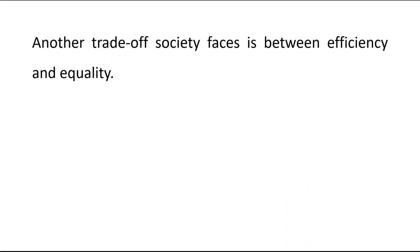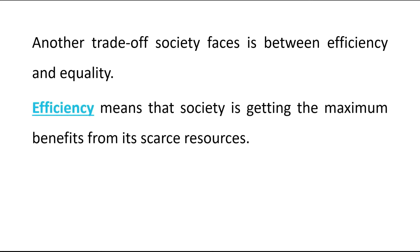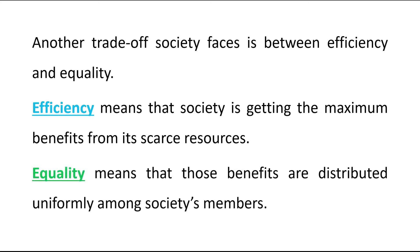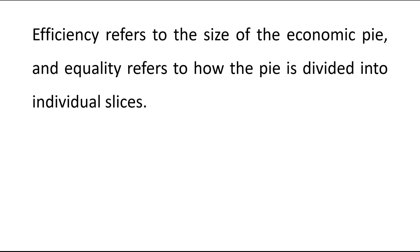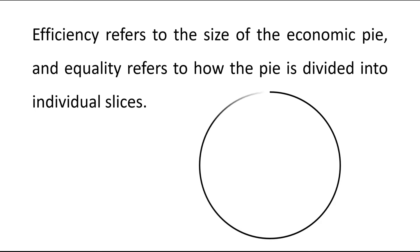Another trade-off that society faces is between efficiency and equality. Efficiency means that society is getting the maximum benefits from its scarce resources. Equality means that those benefits are distributed uniformly among society's members. Efficiency refers to the size of the economic pie, and equality refers to how the pie is divided into individual slices.